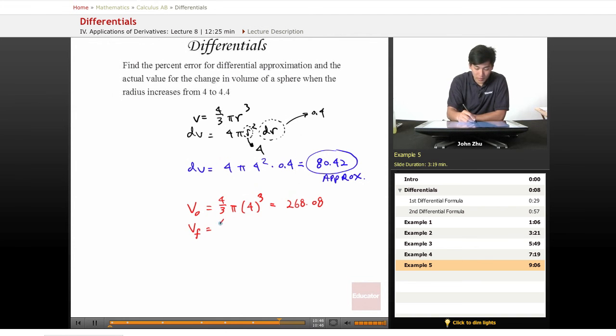The final volume is 4/3 pi times 4.4 cubed. And if we carry that out, we get 356.82. So vf minus v0, we get a change of 88.74.